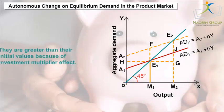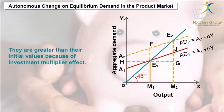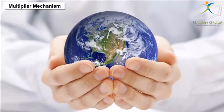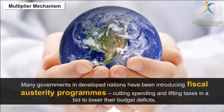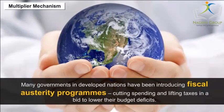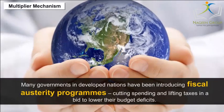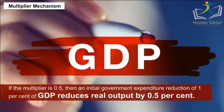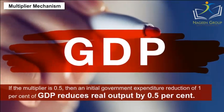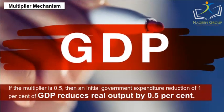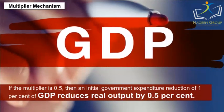Multiplier Mechanism: Many governments in developed nations have been introducing fiscal austerity programs, cutting spending and lifting taxes in a bid to lower their budget deficits. If the multiplier is 0.5, then an initial government expenditure reduction of 1% of GDP reduces real output by 0.5%.